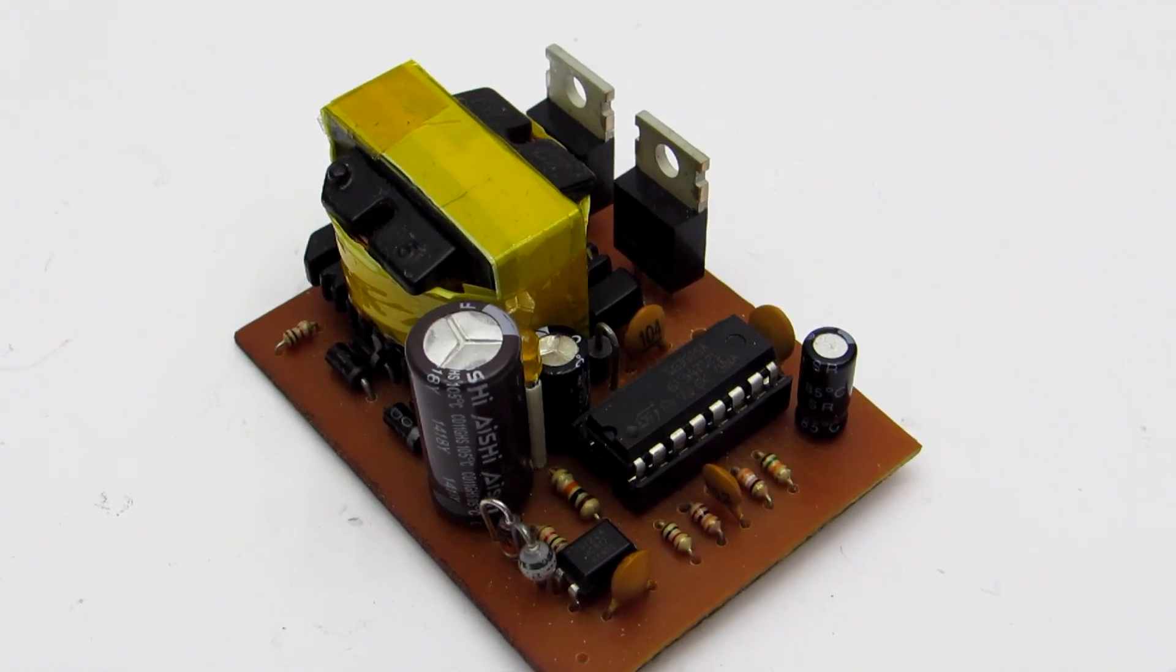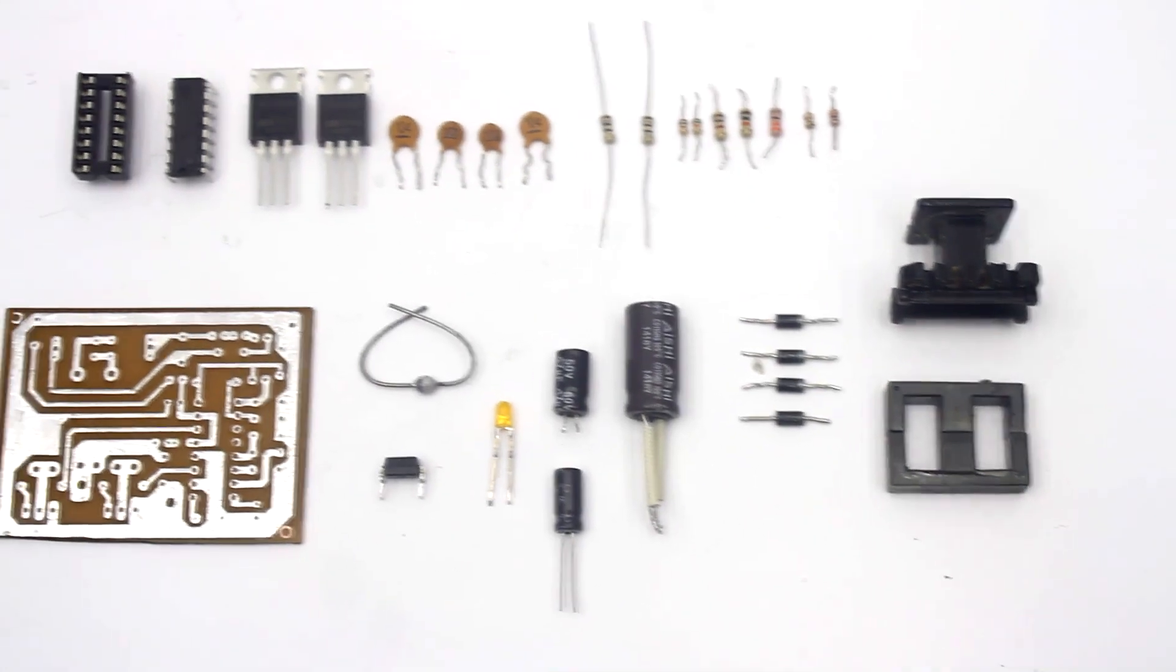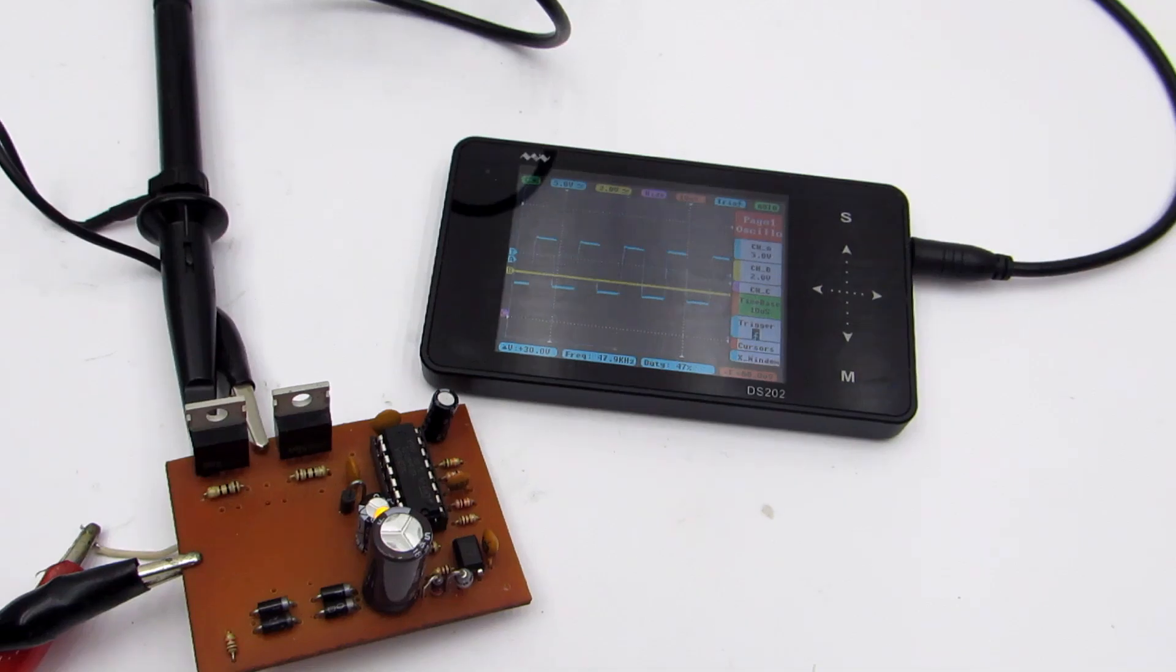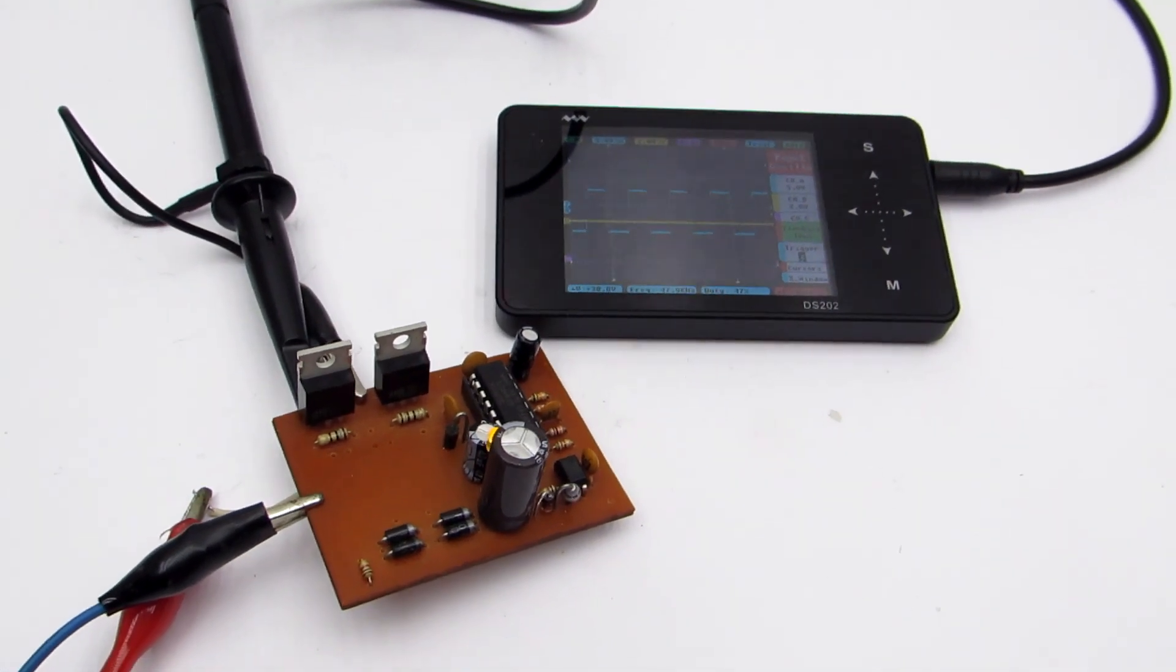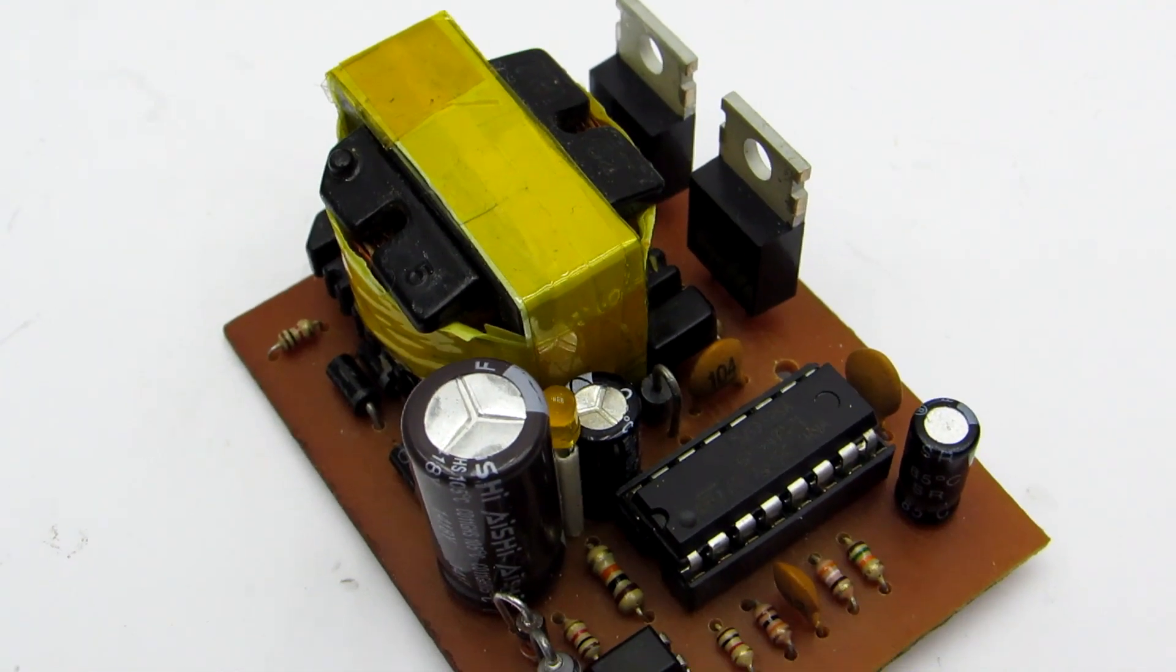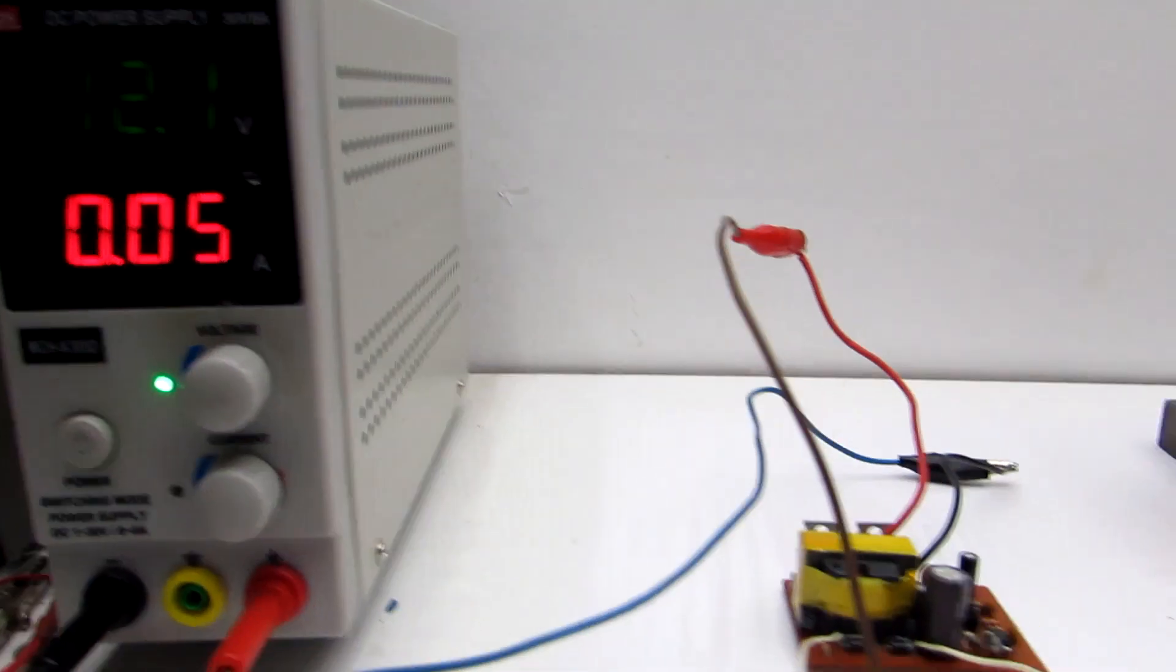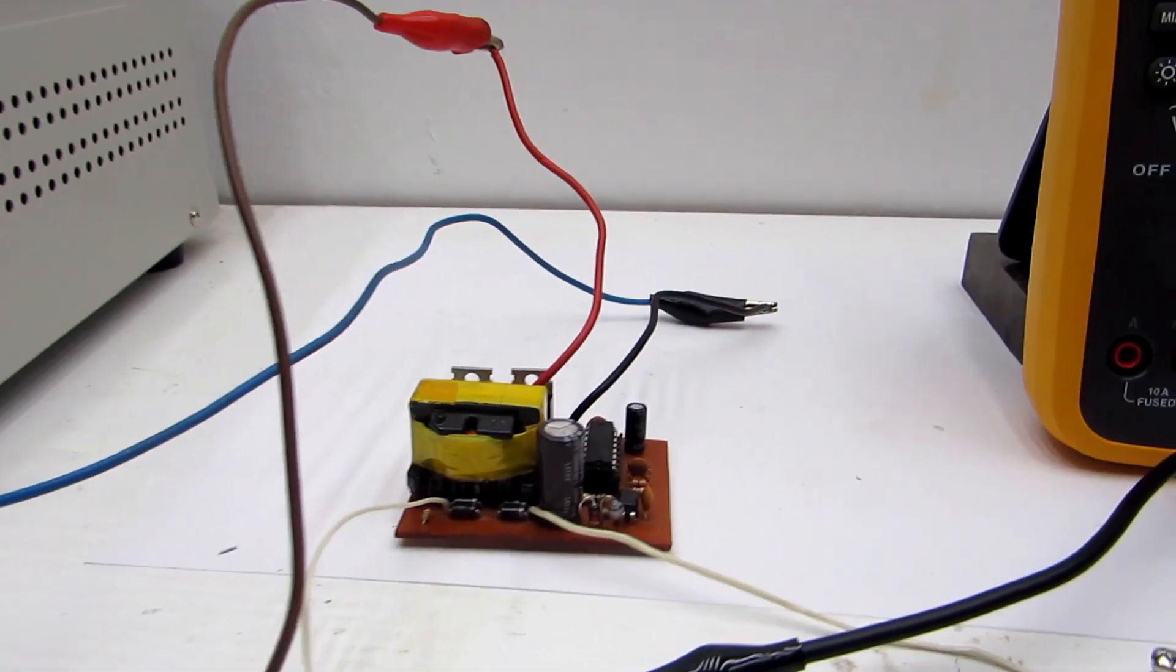The inverter doesn't need much adjustment. Before assembling, it is necessary to check all the components for operation. Before soldering the transformer, it is worth to check the presence of impulses on the gates of fets. If it is ok, connect the transformer. The idle current of it is only 50 to 60 mA. It is very good even for such a small inverter, all thanks to feedback and control.